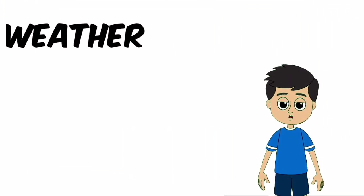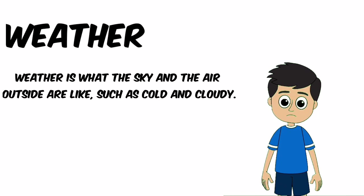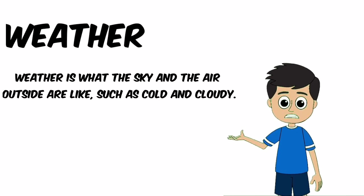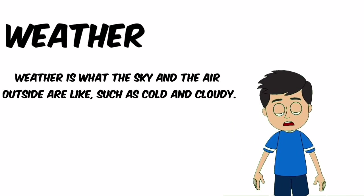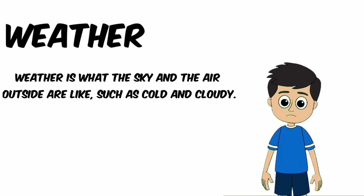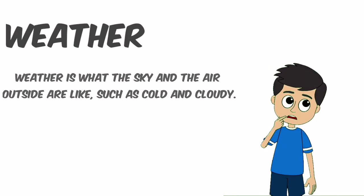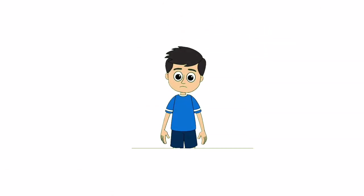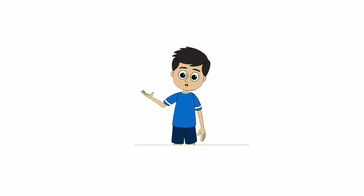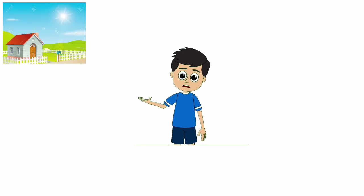What is weather? Weather is what the sky and the air outside are like, such as cold and cloudy. There are six types of weather.